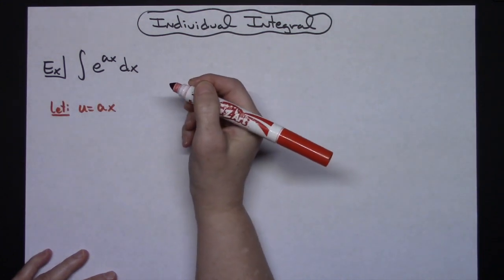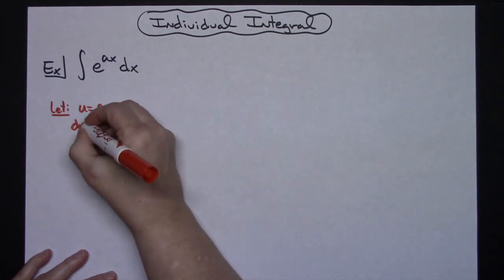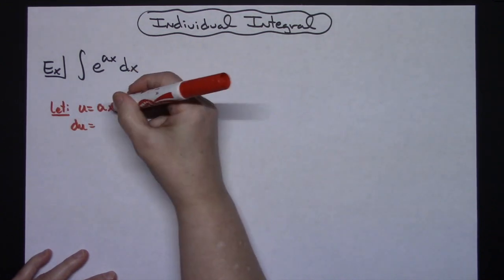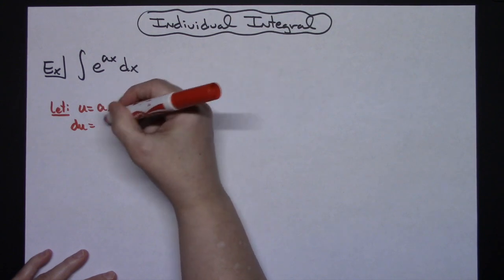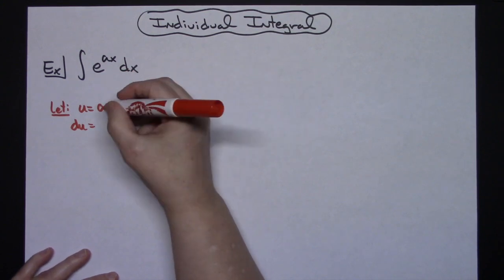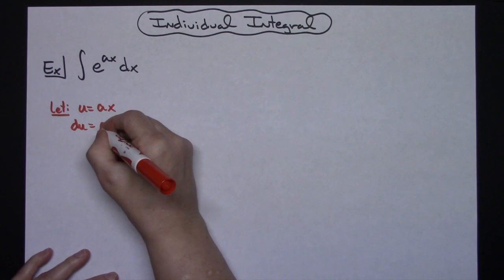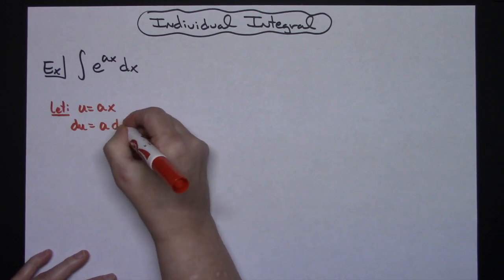I'm going to take the derivative of both sides. So I'm going to go du. Now if a is a constant and x is my variable and I take the derivative there, I'm just going to be left with whatever my constant is. So I will have an a and then we're going to put that dx on there.